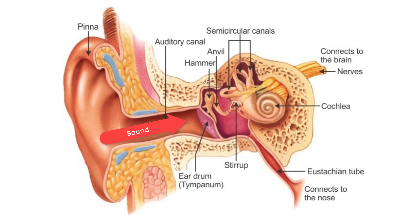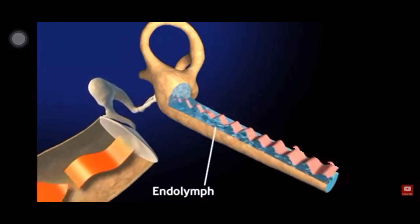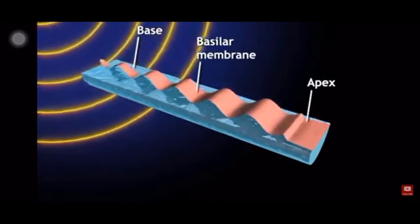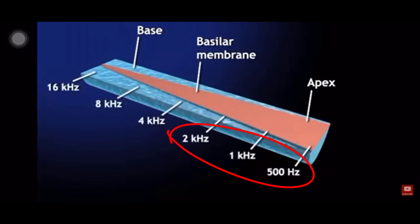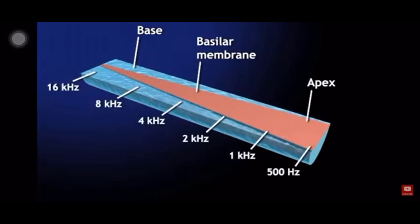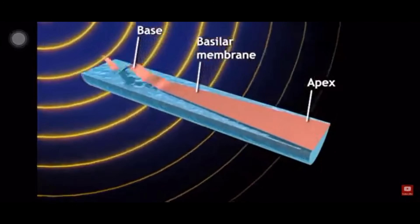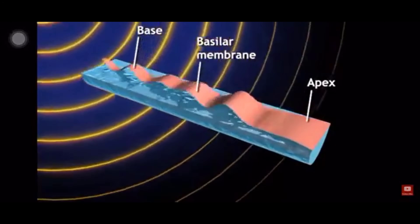As sound enters the ear, it vibrates the eardrum, which sends that vibration through the three middle ear bones and ultimately into the cochlea through the oval window. As the stapes bone sends this vibration through the oval window into the cochlea, it creates a traveling wave that vibrates the basilar membrane. The basilar membrane has high frequency regions near the entrance or base of the cochlea, where the low frequency regions are more towards the end of the cochlea at the apex. High frequency sounds only vibrate the base of the basilar membrane, while low frequency sounds must first travel through the high frequency ranges before they reach the lower frequency regions.